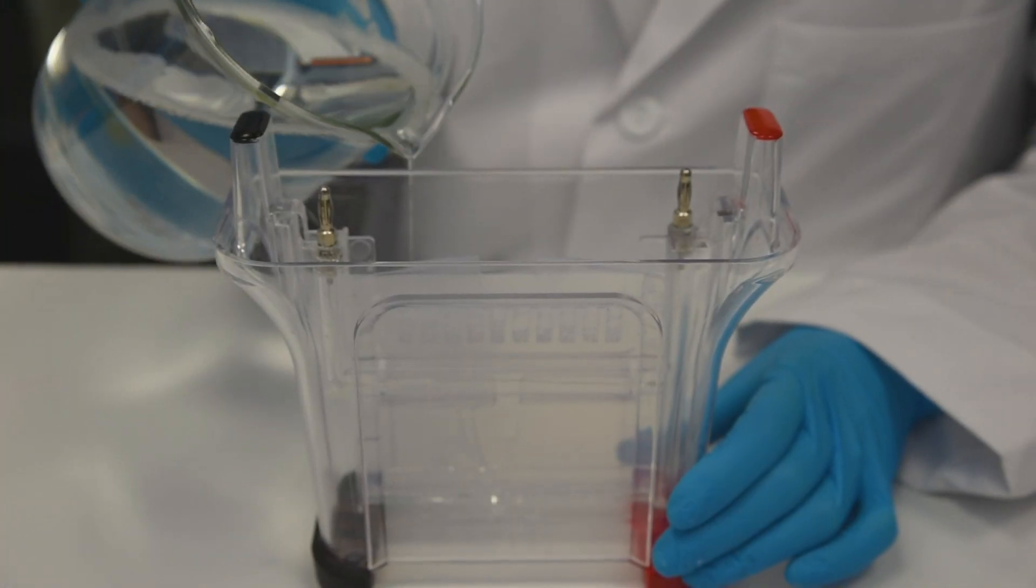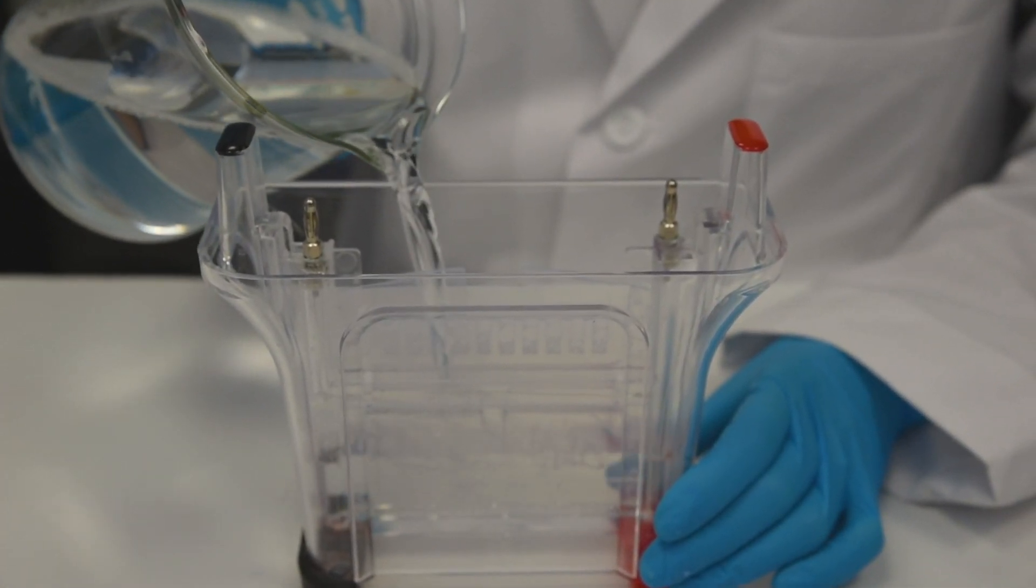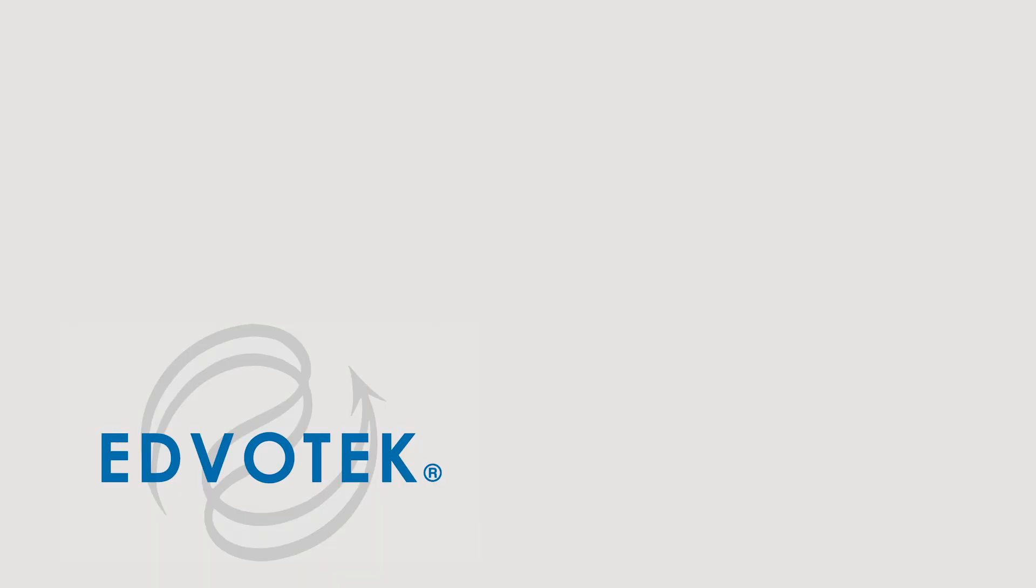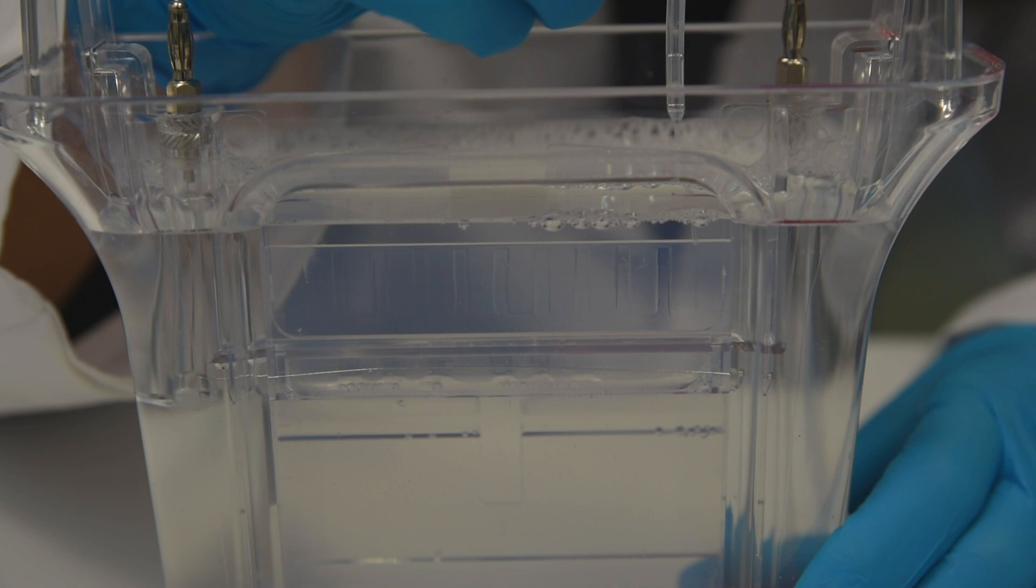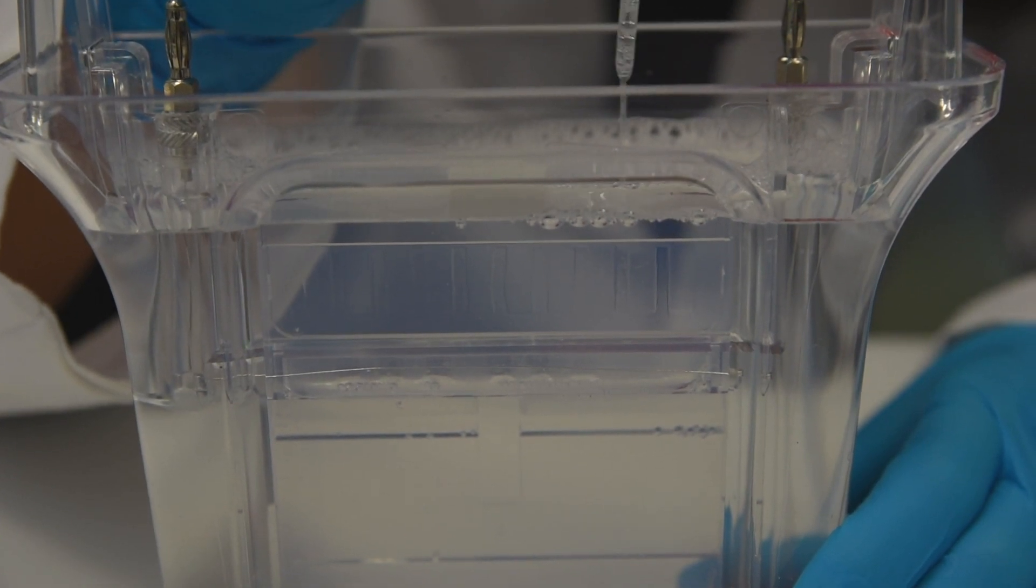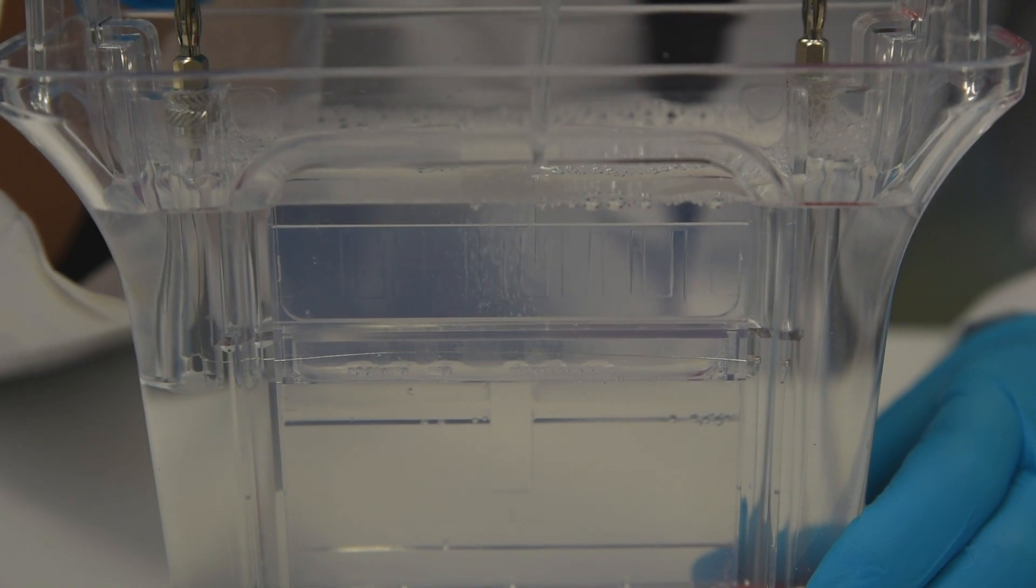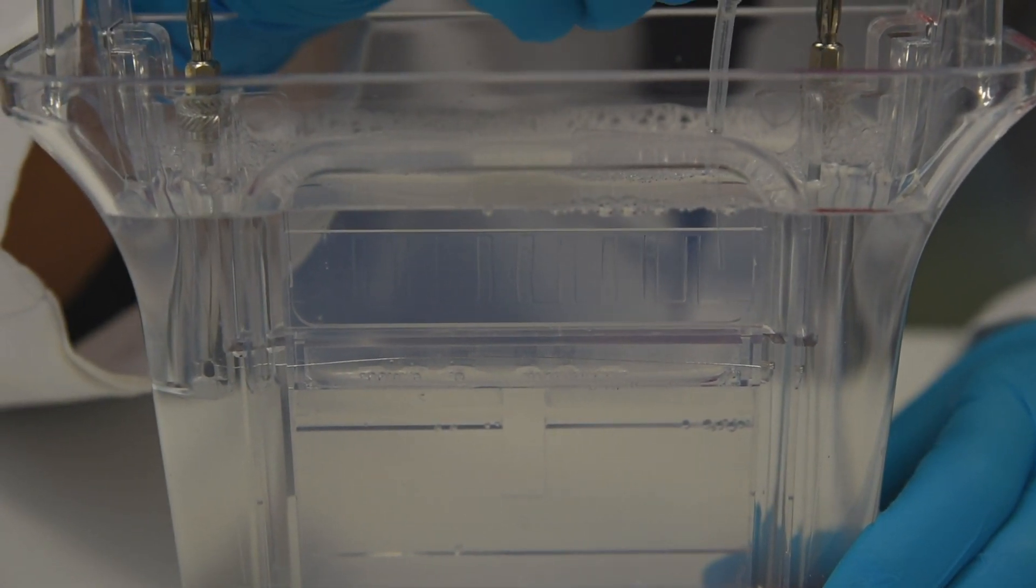Step 5: Add diluted electrophoresis buffer to the chamber until it covers the top of the shorter front plate. Step 6: Rinse each well by carefully squirting electrophoresis buffer into the wells using a transfer pipette. The gel is now ready for sample loading.